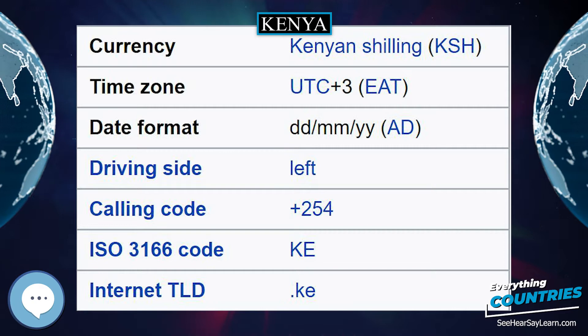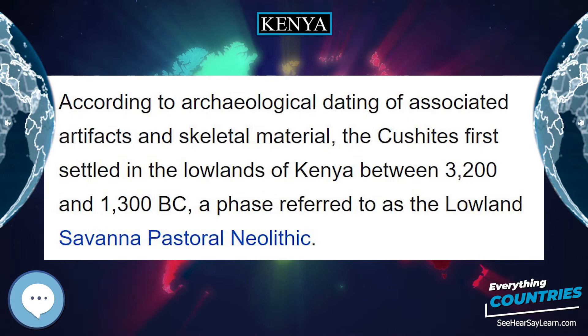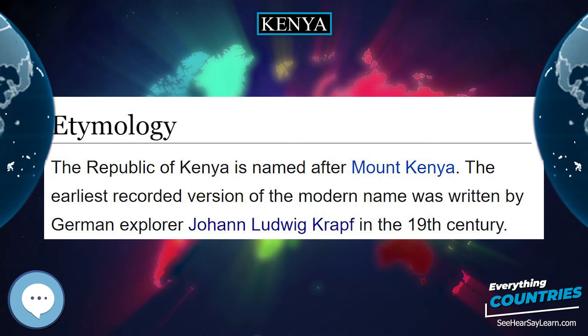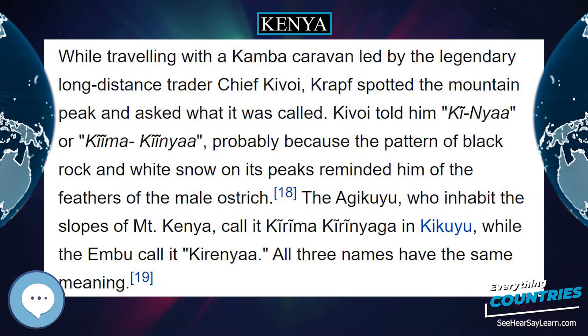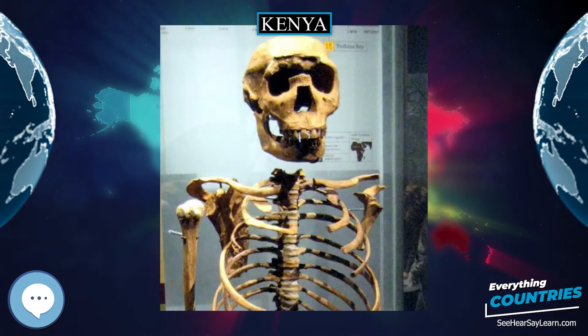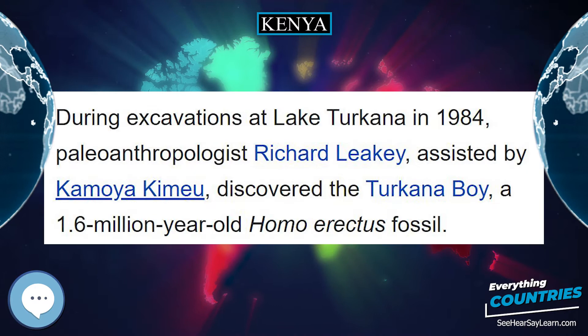Kenya is a presidential representative democratic republic. The president is both the head of state and head of government and of a multi-party system. Executive power is exercised by the government; legislative power is vested in both the government and the National Assembly and Senate. The judiciary is independent of the executive and the legislature. There was growing concern, especially during former President Daniel arap Moi's tenure, that the executive was increasingly meddling with the affairs of the judiciary. Kenya has a high degree of corruption according to Transparency International's Corruption Perceptions Index (CPI). In 2012, the nation placed 139th out of 176 countries in the CPI with a score of 27/100.